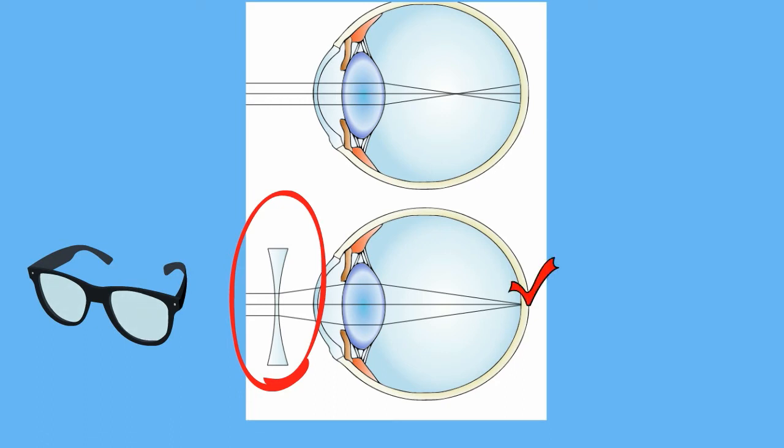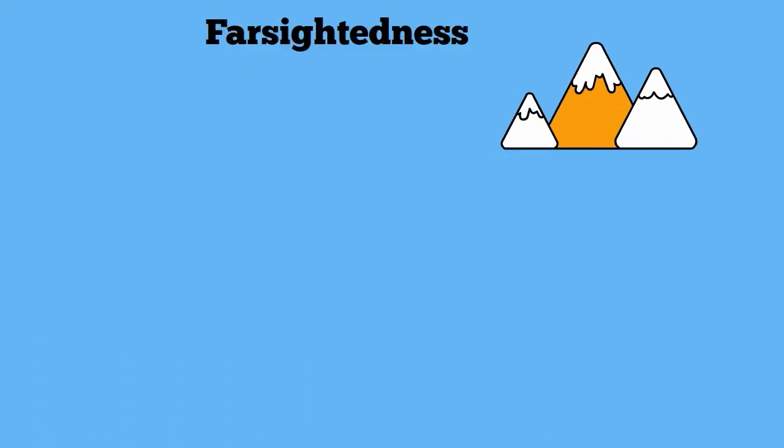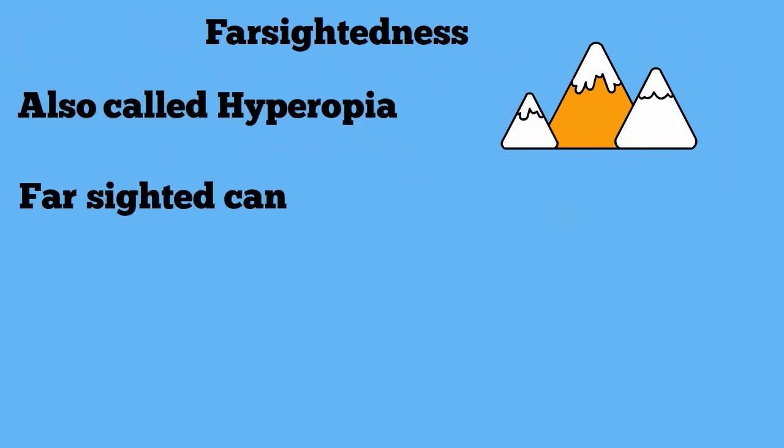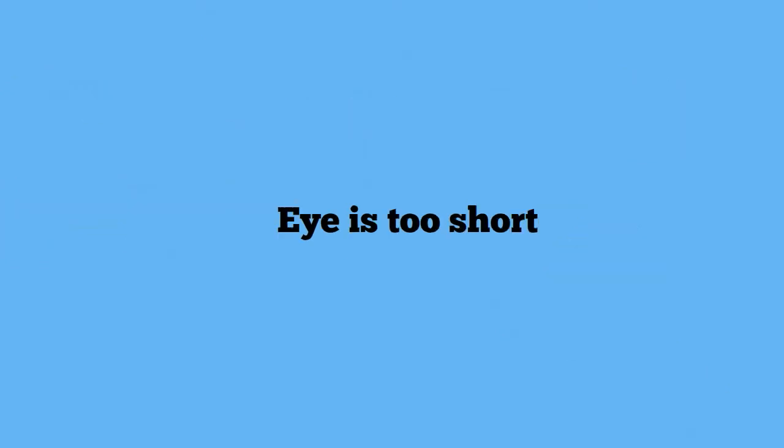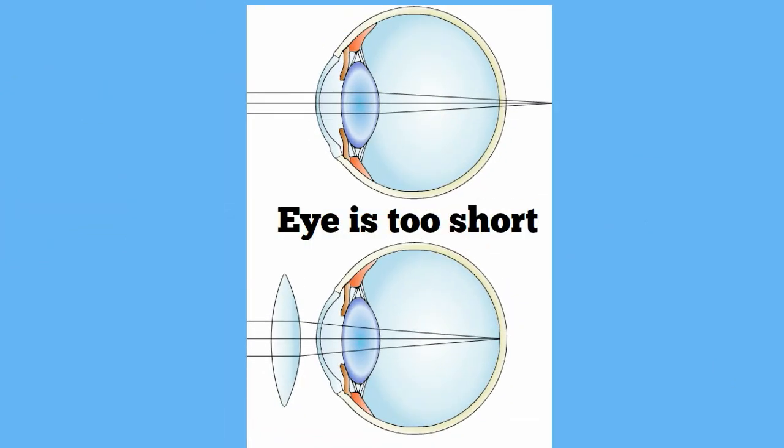Farsightedness, also called hyperopia, is when people can see distance objects clearly. Nearby objects, however, look blurry. The eyeballs of people with farsightedness are too short. Because of this, the lens of the eye bends light from nearby objects so that the image does not focus properly on the retina.